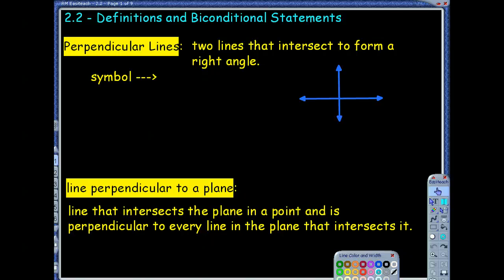So now on to section 2.2. This section is going to focus on a few new definitions and on this new idea of a biconditional statement. And one thing you're going to hopefully figure out is definitions are a pretty big deal in geometry. We use a lot of them.